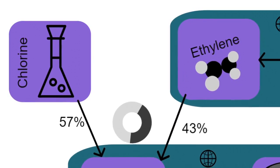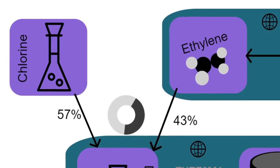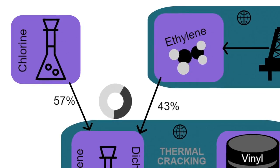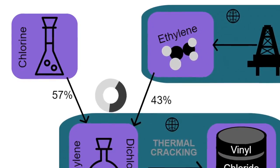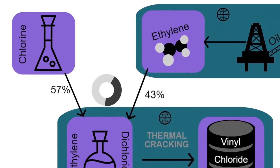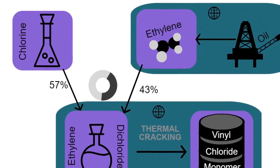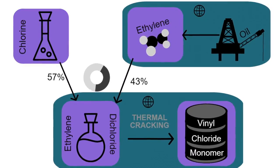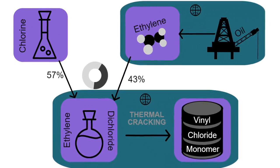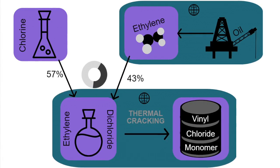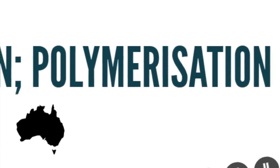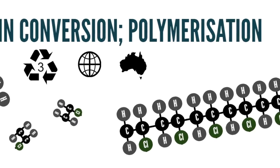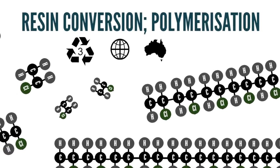In PVC production, chlorine is reacted with ethylene derived from oil in a ratio of 57 parts chlorine to 43 parts ethylene to create ethylene dichloride. This makes PVC the plastic material with the lowest oil derivative content. Thermal cracking is then used to make a monomer gas called vinyl chloride or VCM. This undergoes polymerization when neighbouring molecules join together, creating long chain molecules known as PVC.